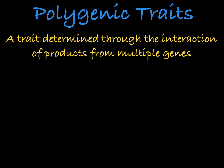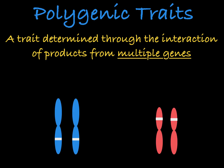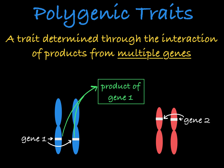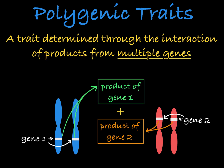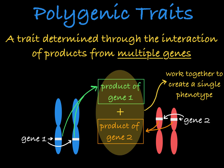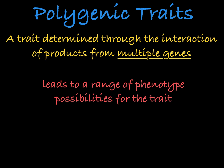A polygenic trait is a trait that is determined through the interaction of the products of more than one gene. For polygenic traits, multiple genes work together to create a phenotype. Usually, with polygenic traits, the combination of many genes leads to a range of phenotype possibilities for that trait.